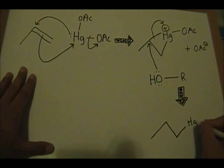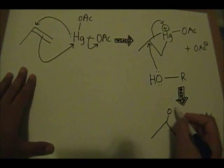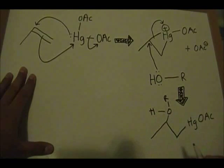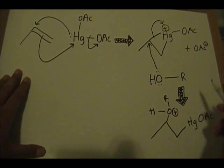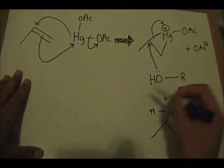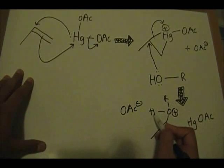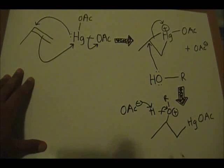The product of step two shows your mercury with one of the acetates on it and your soon-to-be ether, where this oxygen now has a formal positive charge of plus one. The acetate ion formed in the first step then comes into play — it makes a bond with this hydrogen, and you kick off this pair of electrons to the oxygen. That's the third step — pretty straightforward.